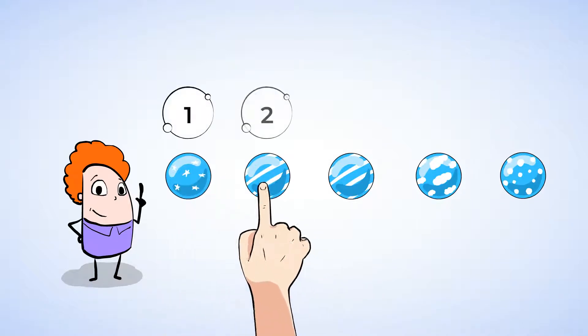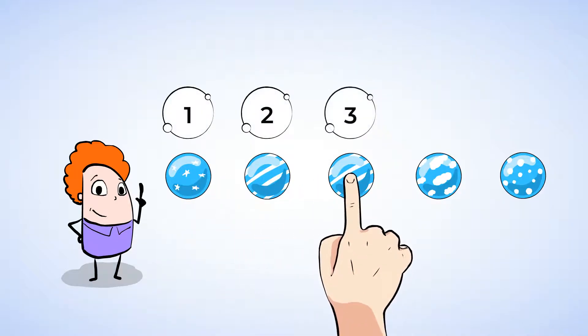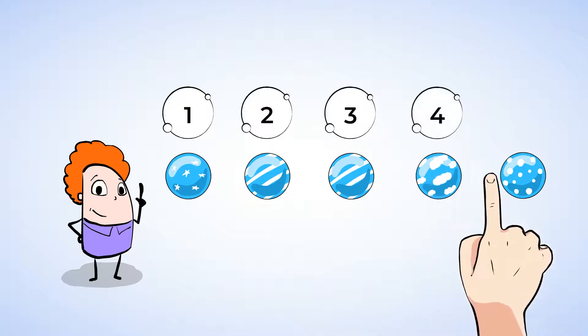One marble. Two marbles. Three marbles. Four marbles. Five marbles. Huh, there's still five marbles. Five will always be the last number when counting these marbles. Even if you mess them up or put them in a different order.